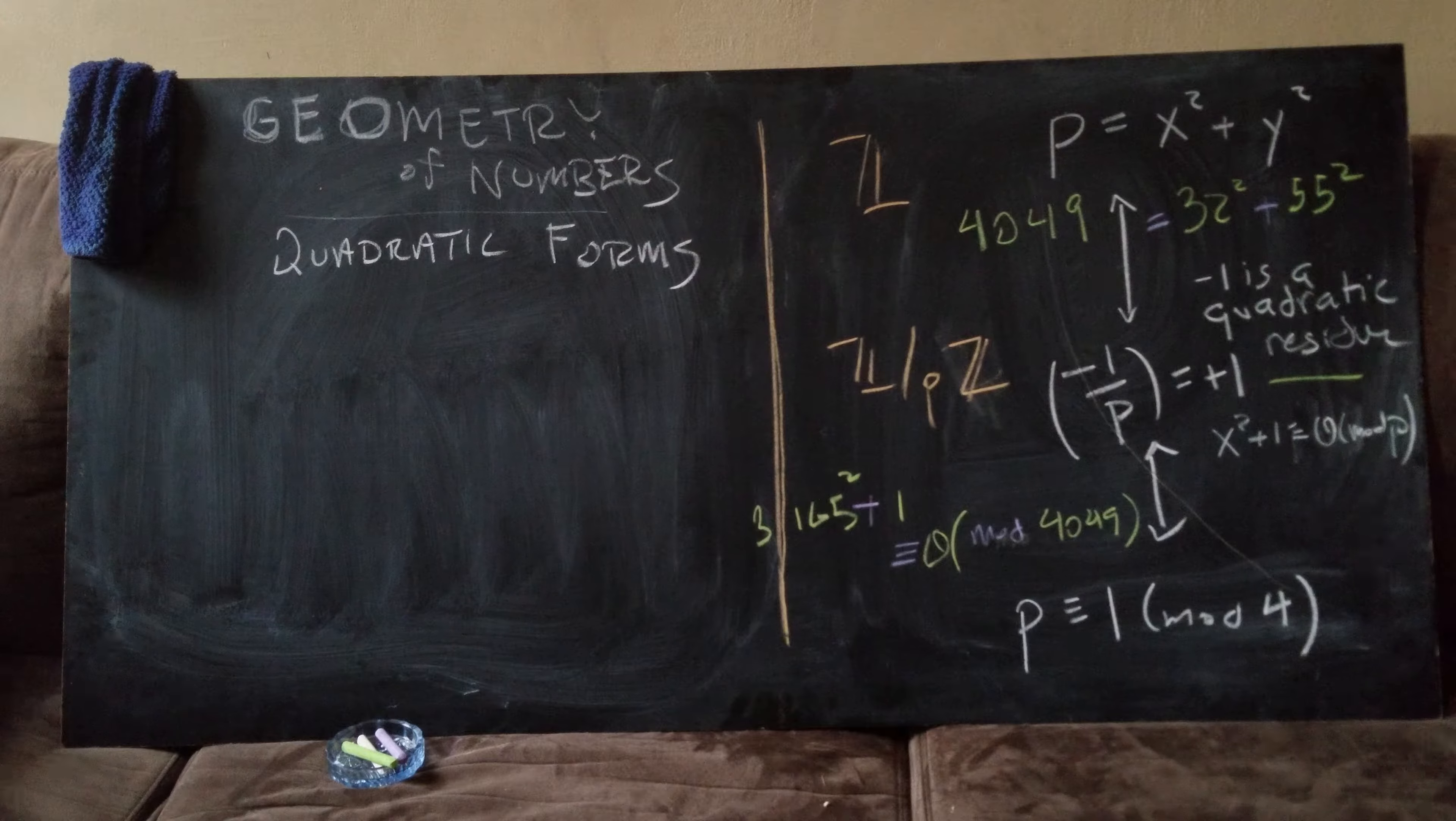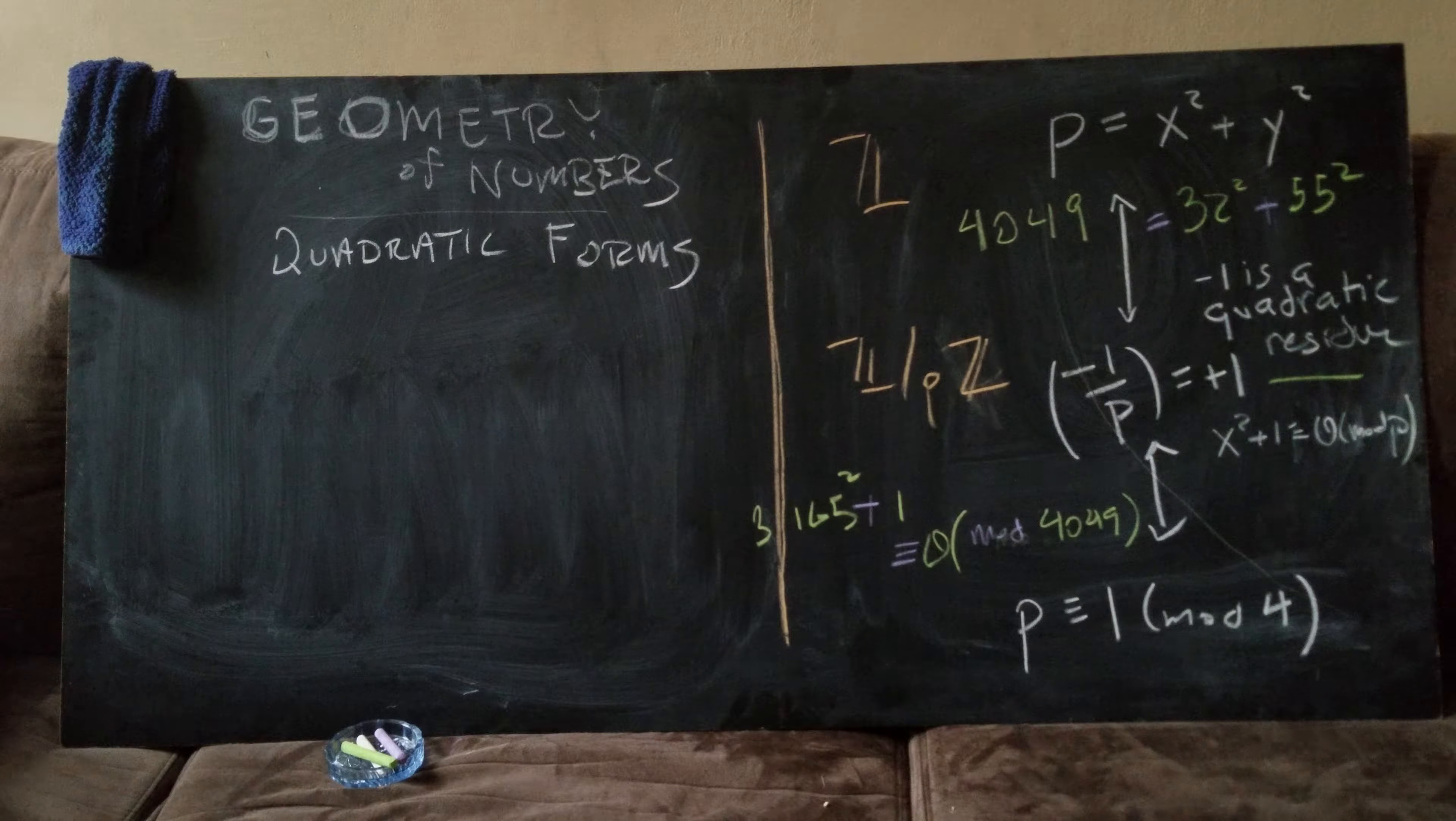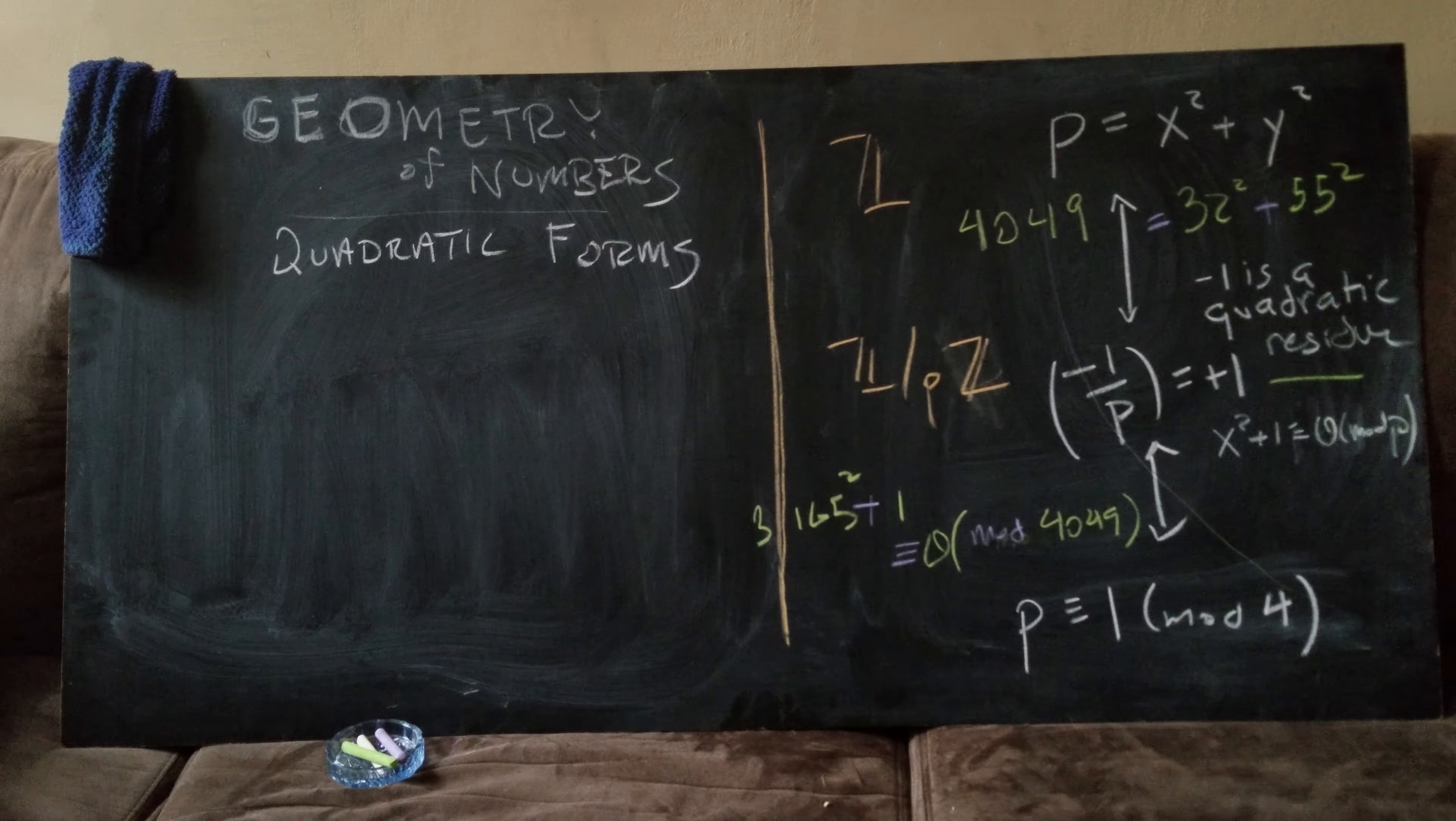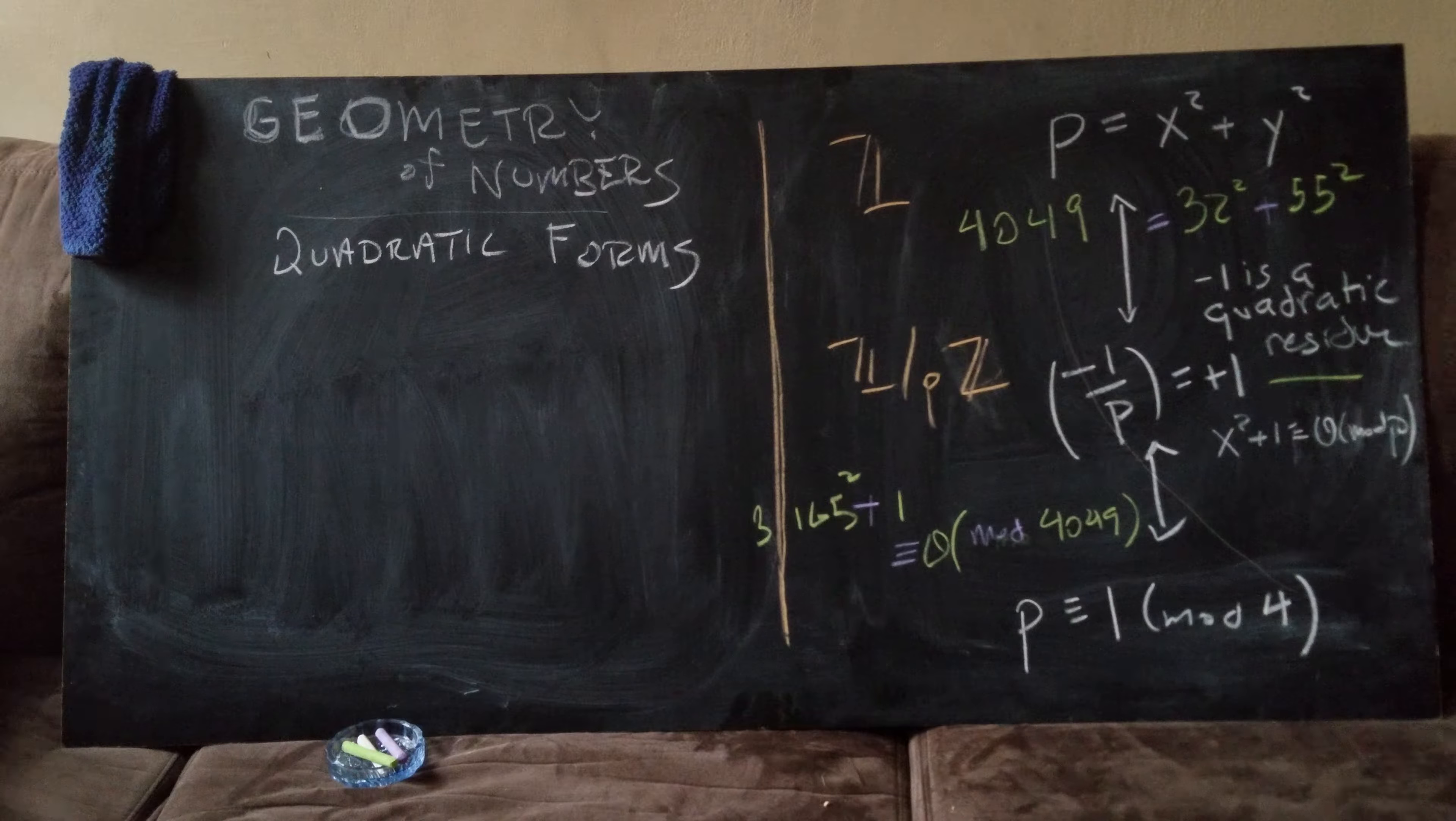To say that p is the sum of two squares is a statement over the integers, so we call that Z. To say that minus one is a quadratic residue is a statement of Z mod pZ.